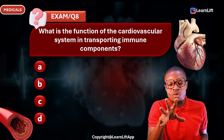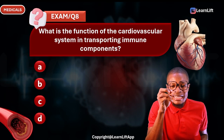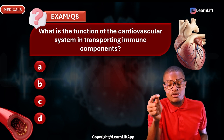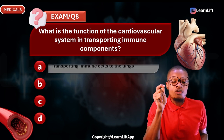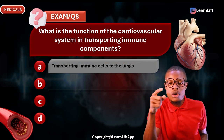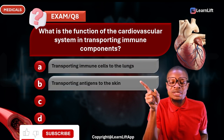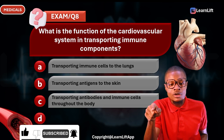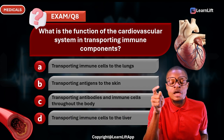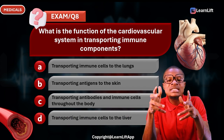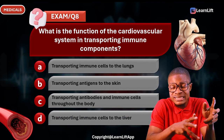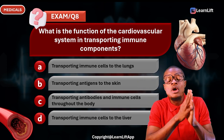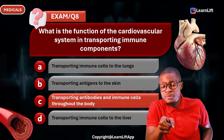Question eight: What is the function of the cardiovascular system in transporting immune components? Option A: transporting immune cells to the lungs. Option B: transporting antigens to the skin. Option C: transporting antibodies and immune cells through the body. Option D: transporting immune cells to the liver. The correct answer is Option C — transporting antibodies and immune cells through the body.